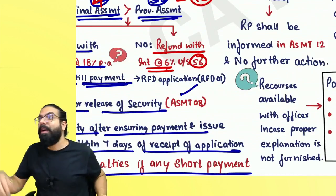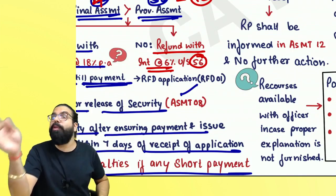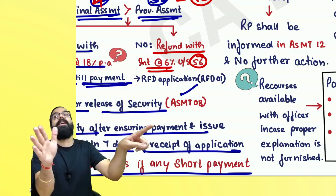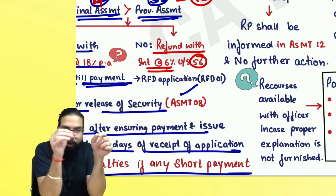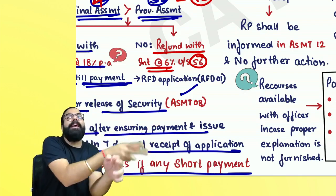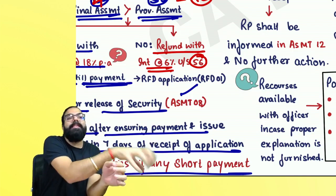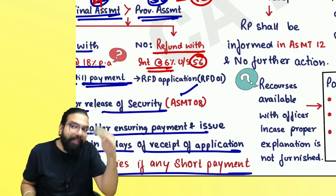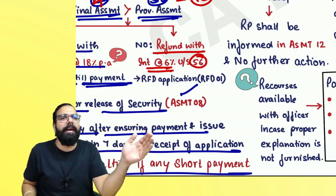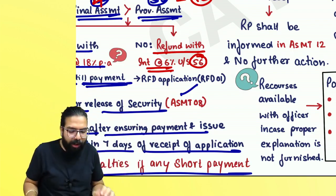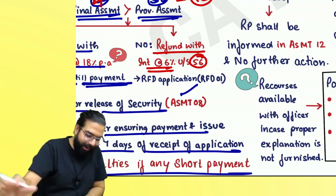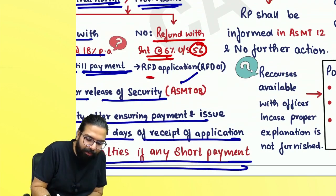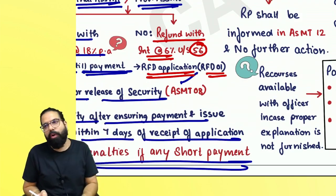Section 56 says: once the final assessment order has come, you give an application. If within 60 days they don't give you the refund, then after 60 days, whatever the delay, they will give you interest at the rate of 6%. The refund application will go in GST RFD-01.